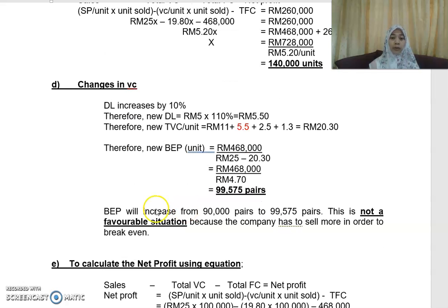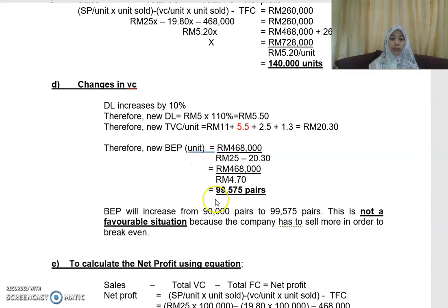With the new total variable cost of RM20.30, the new break-even point is: total fixed cost RM468,000 divided by (selling price RM25 minus new variable cost RM20.30), giving a new break-even point of 99,575 pairs of shoes.